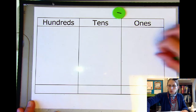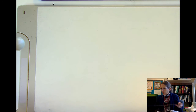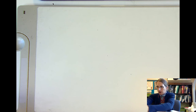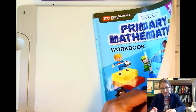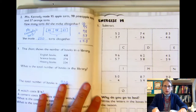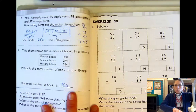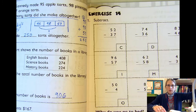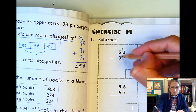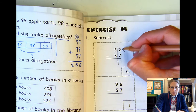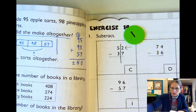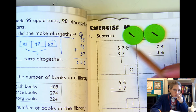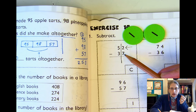Let's do one from our workbook. Your homework for today is pages 57 to 58. Let's go ahead and do a couple of these together. The first one: we have 52 minus 37. We're going to start in the ones place. If I have two ones, can I take away seven? No. So we have to do some renaming — we go over to the tens place.